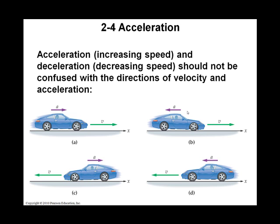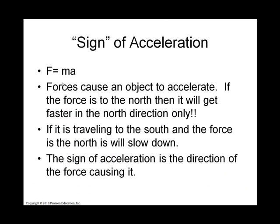The negative acceleration is the direction that you would get faster in. In case B, the car is moving forward and the acceleration is negative, so it would be slowing down. But in D, moving backwards with negative acceleration, it would be getting faster and faster. This is because forces cause objects to accelerate, and that force determines the direction of acceleration. If you push somebody to the north, they get faster in the north direction — but if they were traveling toward you and you pushed them north, you would slow them down. The sign of the acceleration is in the same direction as the force causing it.